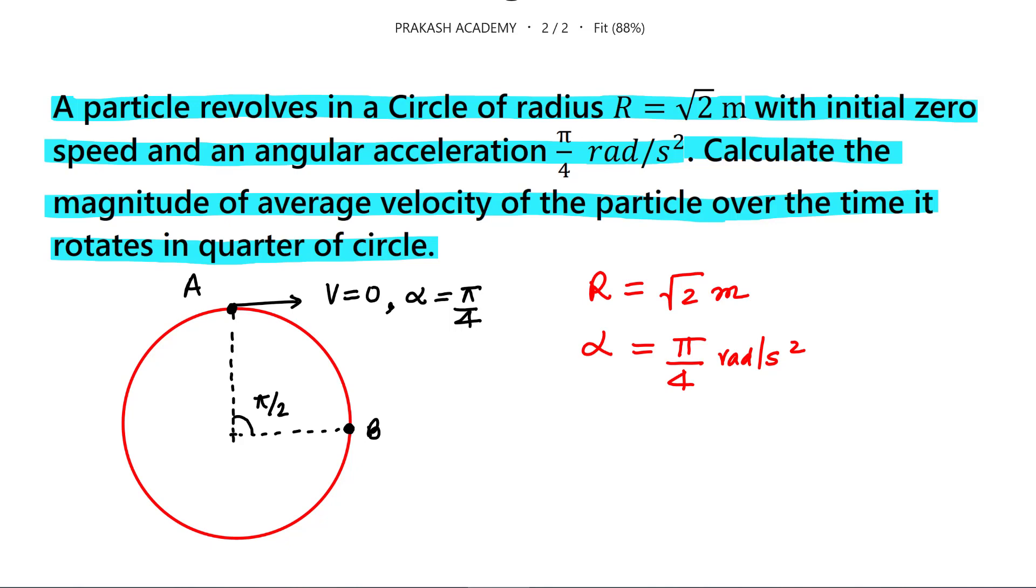So I hope you have solved this problem. What we are saying is average velocity equals nothing but total displacement divided by total time.